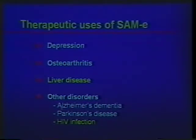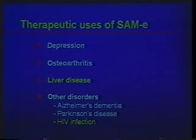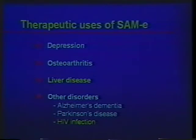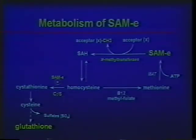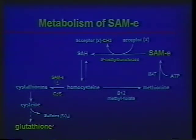In depression and osteoarthritis and liver disease, there are numerous trials - probably over 40 double-blind and controlled trials in depression alone. I'll focus this talk on HIV infection and liver disease, specifically on the biochemistry and the role of SAMe and GSH in those two particular disorders, and the biochemical connection between S-adenosylmethionine and glutathione.